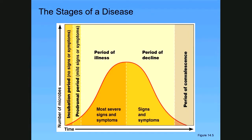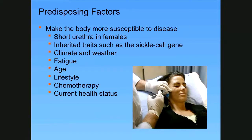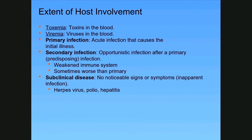We talked about stages of disease and reservoirs. In host involvement, toxemia means there are toxins in the blood, viremia means viruses. When we talk about extent of host involvement, in a primary infection — that's an acute infection — you first get sick and then you start to feel signs and symptoms. That's referred to as an acute stage illness.